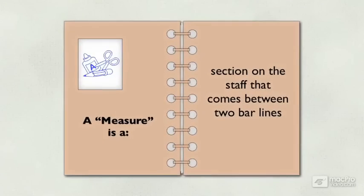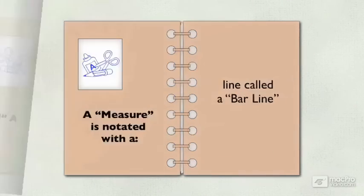A measure is a section on the staff that comes between two bar lines. A measure is notated with a line called a bar line.